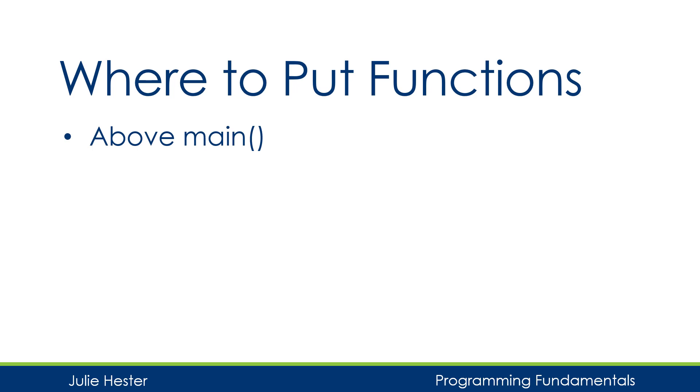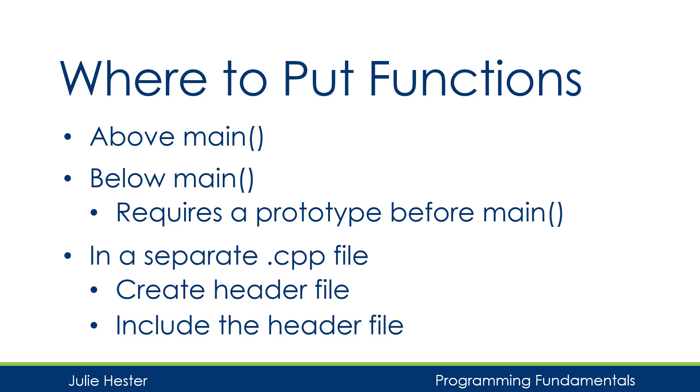So where do we put functions in our program? The simplest answer is, we can put the entire function definition above main in our program file. And that will work okay if we're not wanting to share that function with other programs. A lot of people will choose to put functions below main in the file, and whenever you do that, you have to have a prototype defined before main. The functions here that I've been showing you aren't using this method. They're all being put above main. And then finally, when I am wanting to share a function between different programs or processes, I'll build that function definition in its own CPP file, create a header file with the function signature, and then include that header file in my program.